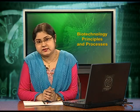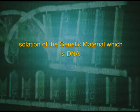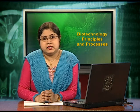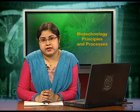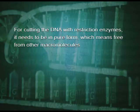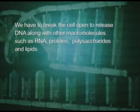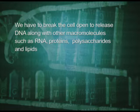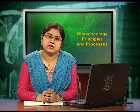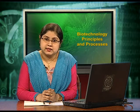The first step in the order is isolation of the genetic material, which is DNA. As we know, the genetic material in the majority of organisms is deoxyribonucleic acid or DNA. For cutting the DNA with restriction enzymes, it needs to be in pure form, free from other macromolecules. Since the DNA is enclosed within the membranes, we have to break the cell open to release DNA along with other macromolecules such as RNA, proteins, polysaccharides, and lipids.